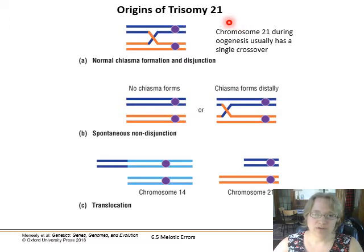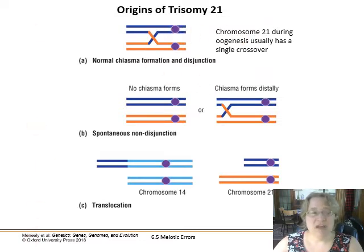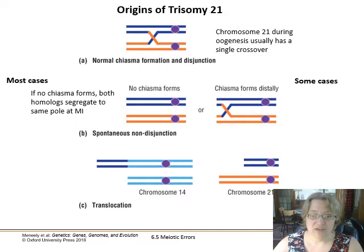Trisomy 21 is one of the rare trisomies that is actually survivable — most of them are fatal. What happens usually is that you have normal chiasma formation and disjunction. But in the non-genetically inherited forms of Down syndrome — trisomy 21 — in most cases there's no chiasma forming, and both homologues end up segregating to the same pole. This is non-disjunction in meiosis I.